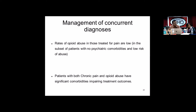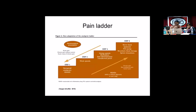Regarding management of concurrent diagnosis: rates of opioid abuse in those treated for pain are actually low in patients with no psychiatric comorbidities and low risk of abuse. However, patients with both chronic pain and opioid abuse have significant comorbidities impairing treatment outcomes, greater incidence of psychiatric diagnoses, repeated complaints of inadequately treated pain, more health problems, and higher rates of suicide, depression, and anxiety.